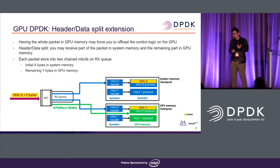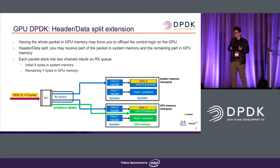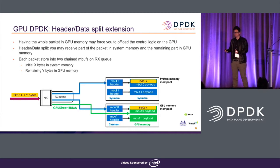For this reason, we implemented a new feature called header data split. It relies on MBUF chaining and allows you to receive a single packet specifying that the first part goes to system memory and the remaining bytes go to GPU memory, by chaining MBUFs when receiving.